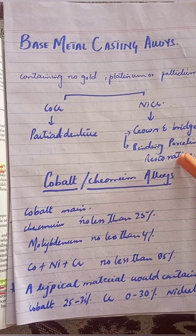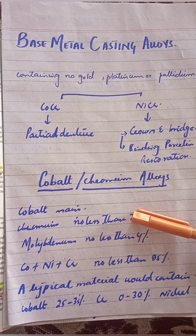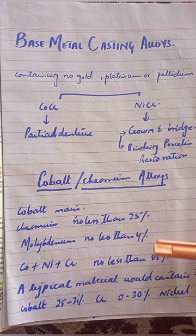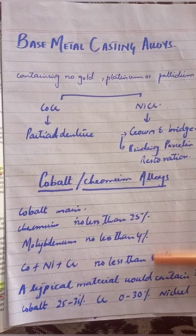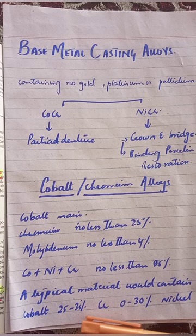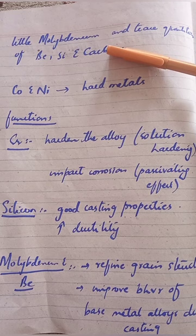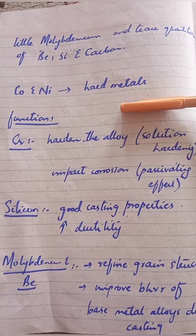Nickel-chromium is also used for bonding porcelain restorations. Now, one by one, we will see what properties and composition are in cobalt-chromium alloys. The composition is: cobalt as the main ingredient, chromium no less than 25%, molybdenum less than 4%, and cobalt, nickel, and chromium together should be less than 85%. Typically, we have 35 to 65% cobalt, chromium, and 0 to 30% nickel, with little molybdenum and trace quantities of beryllium, silicon, and carbon.